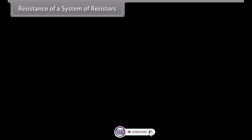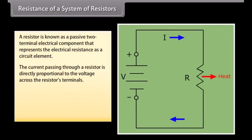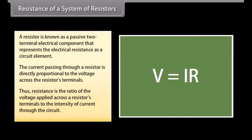A resistor is a passive two-terminal electrical component that represents electrical resistance as a circuit element. The current passing through a resistor is directly proportional to the voltage across the resistor's terminals. Thus, resistance is the ratio of the voltage applied across a resistor's terminals to the intensity of current through the circuit.